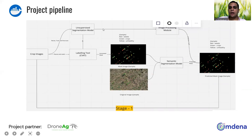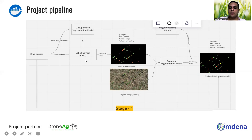The first path was building an unsupervised segmentation model followed by an image processing module for post-processing. The second path was to label the data and then train a semantic segmentation model.